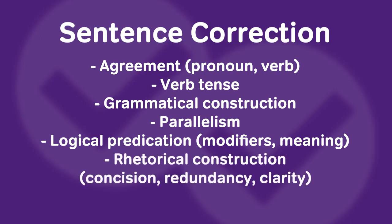Next we have rhetorical construction, which covers all the stuff that doesn't quite fit under grammar but is important to the effectiveness of the sentence. Some important ones here: redundancy — making sure we're not saying the same thing twice; concision — making sure we're conveying the correct meaning as efficiently as possible; and clarity — making sure we don't have any ambiguity in the sentence, especially when it comes to things like pronouns.